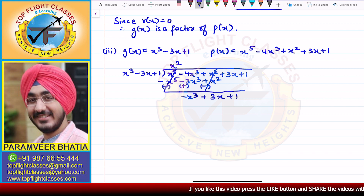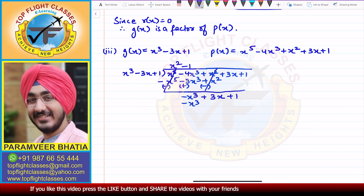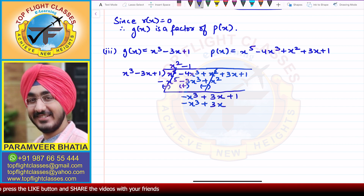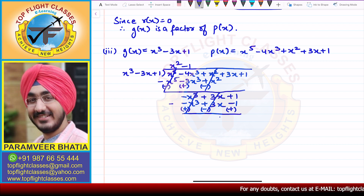To eliminate −x³, I multiply by −1: x³ × (−1) = −x³, −3x × (−1) = +3x, and 1 × (−1) = −1. On subtraction, signs change: −x³ + x³ cancels, 3x − 3x cancels, and +1 + 1 = 2. So 2 is the remainder.